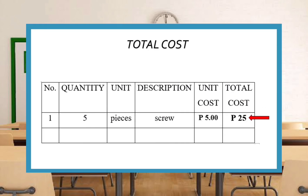Total cost is obtained when the unit cost and quantity are multiplied. You should multiply quantity and unit cost. For example, the quantity is five and the unit cost is five. Five times five is equal to 25; therefore, the total cost is 25.